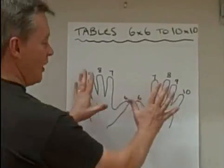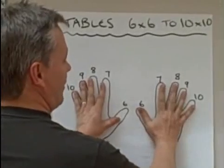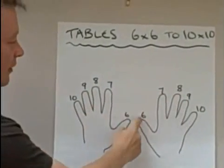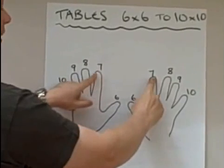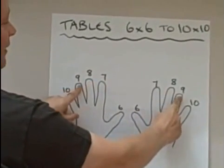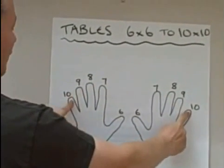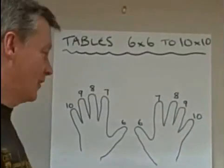The way it works is that you use your hands just like that, and the thumbs are the number 6. The first finger is the number 7. The next finger is the number 8. The next finger is the number 9. And then your little finger is the number 10.